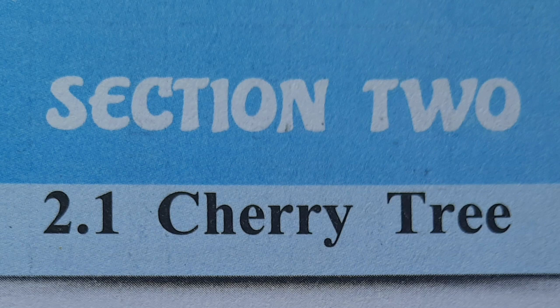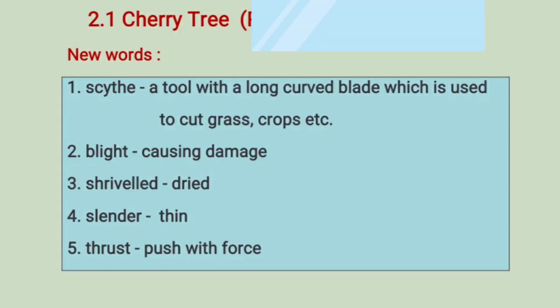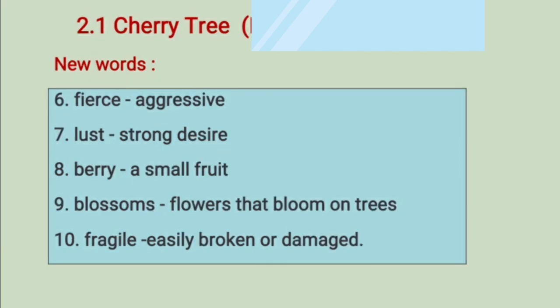Cherry Tree is the first poem in the second section, which is the poetry section. Let's learn new words from the poem. Scythe means a tool with a long curved blade which is used to cut grass. Blight means causing damage. Shrivelled means dried. Slender means thin. Thrust means push with force. Fierce means aggressive. Lust means strong desire.